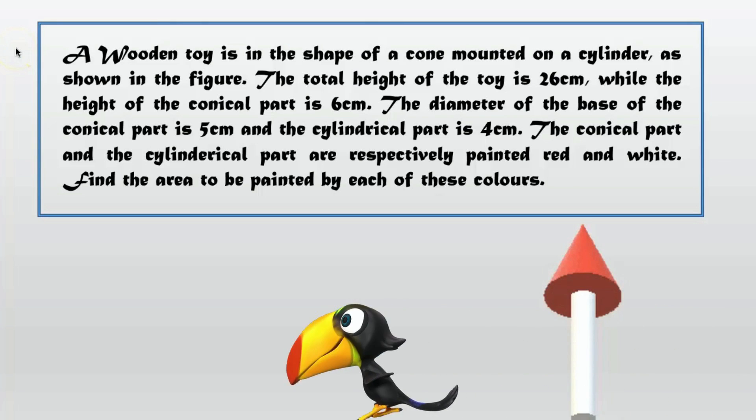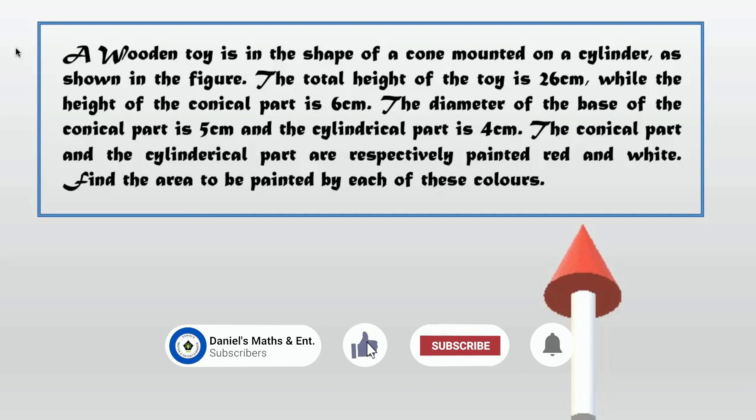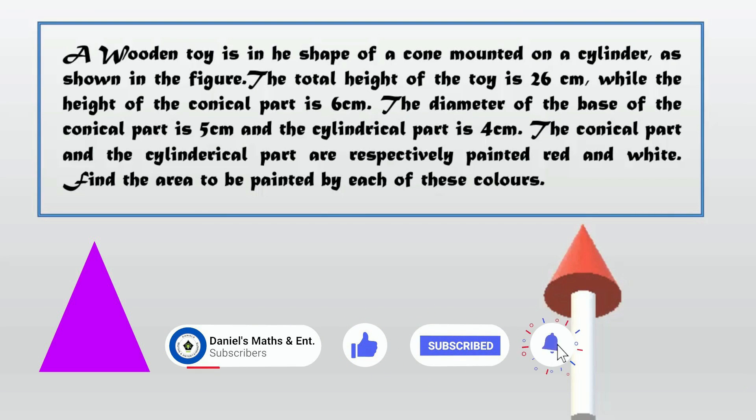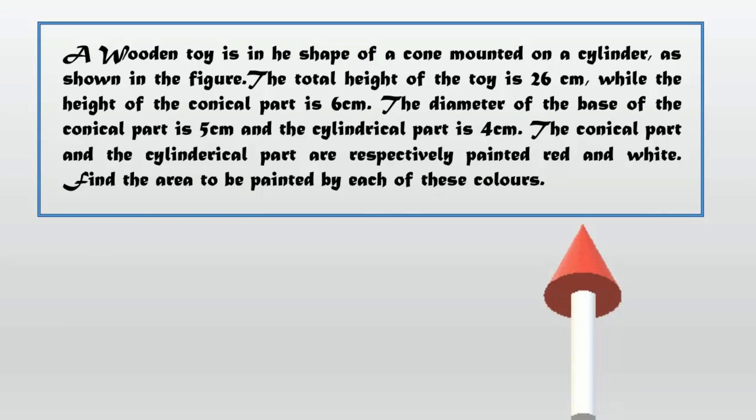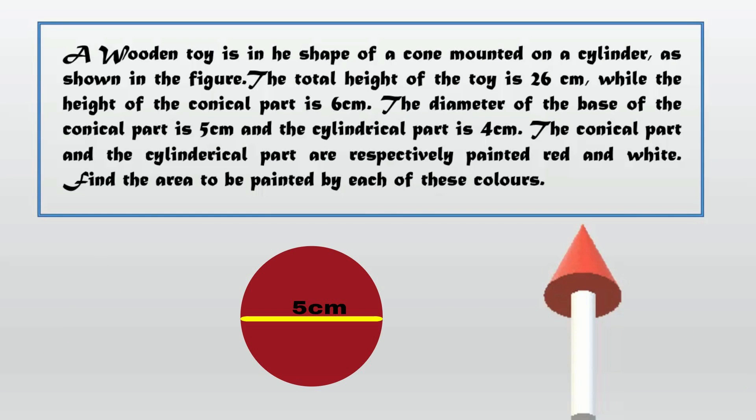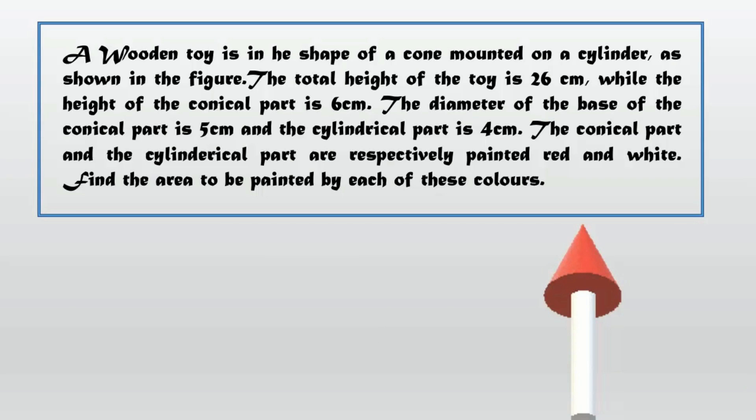A wooden toy is in the shape of a cone mounted on a cylinder, as shown in the figure. The total height of the toy is 26 cm, while the height of the conical part is 6 cm. The diameter of the base of the conical part is 5 cm, and the cylindrical part is 4 cm.